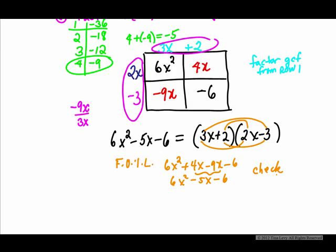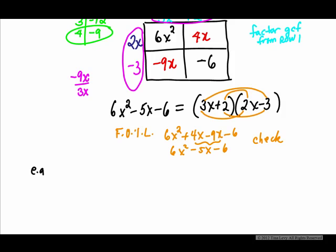Another important part of this, I could have put the -9x here and the 4x here. The order would not be important. The two parentheses would be the same. It doesn't matter what order. We'll try another one. Let's factor, example given, I will have you factor 15x² - 31x + 10.